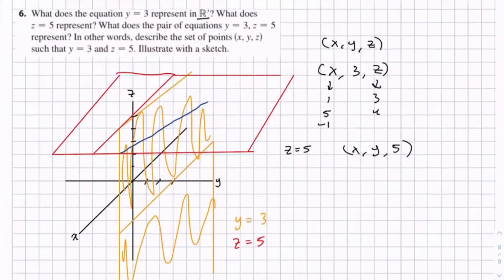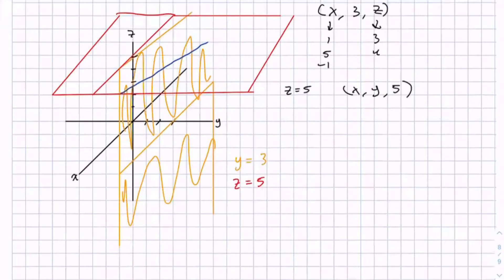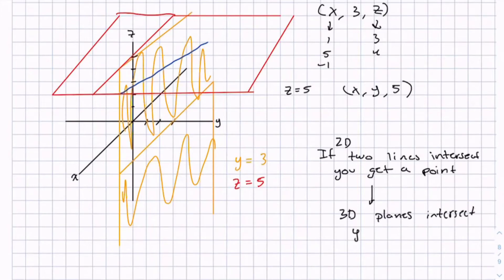This is kind of hard to visualize, but if you think about it from going from 2D to 3D: In 2D, if two lines intersect, you get a point. So if you make everything one higher dimension in 3D and you have planes intersecting, you get a line.